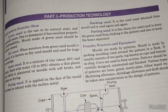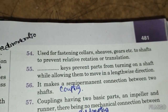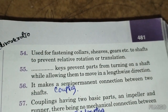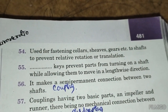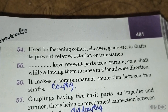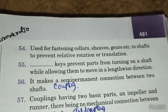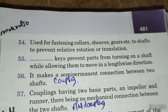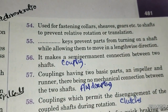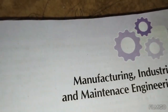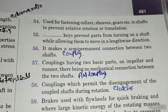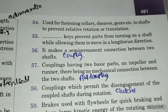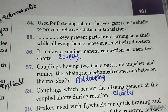A set screw is used for fastening collars, gears, and shafts to prevent relative rotation. A feather key prevents parts from turning on a shaft while allowing them to move in the lengthwise direction.